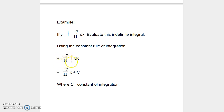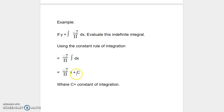So, negative 7 over pi integral dx. When we perform the integration process, integral dx converts to x. Therefore, we can write this as negative 7 over pi times x plus c. Whenever we complete the integration process, we are going to add a constant to it.